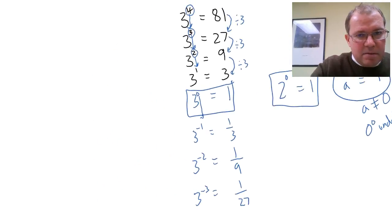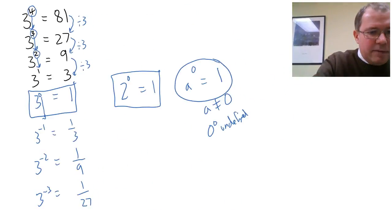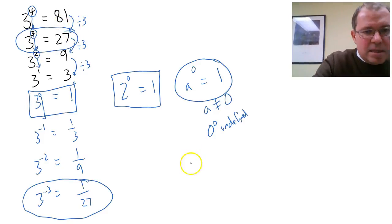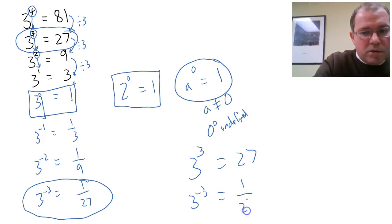And you can see the pattern very clearly, I hope. If you compare 3 to the power of minus 3 with 3 to the power of 3, you can see that 3 to the power of 3 is 27, and 3 to the power of minus 3 is 1 over 27.